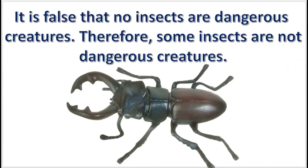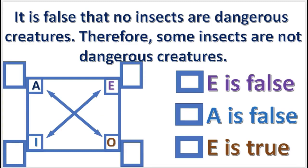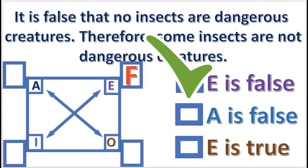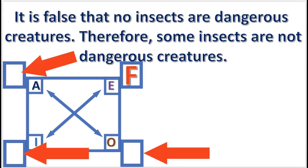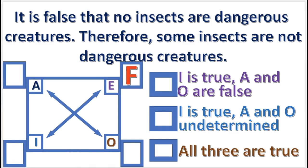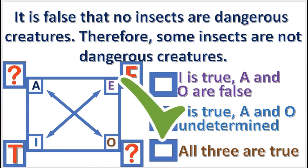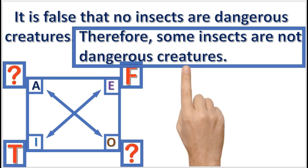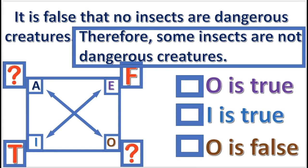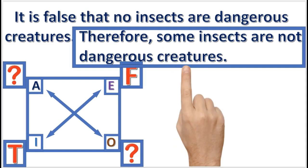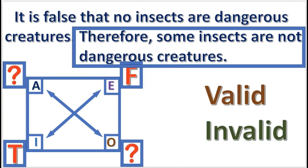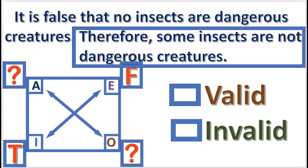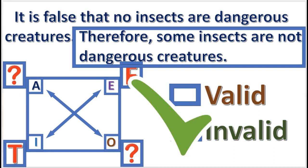Next practice problem: for the premise, what truth value do you enter into the square? E is false — we assume that the premise is true, and it says that an E proposition is false. Next, what is the truth value for the other propositions? I is true, and A and O are undetermined. Next, what does the conclusion claim? The conclusion claims that an O proposition is true. Since the conclusion does not match the square, the inference is invalid.